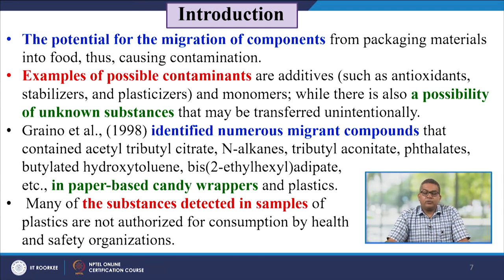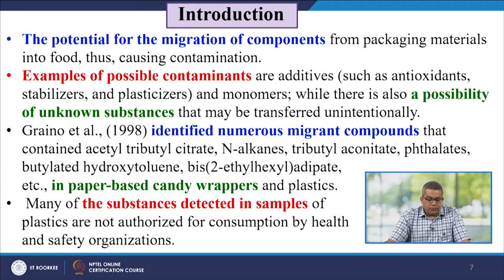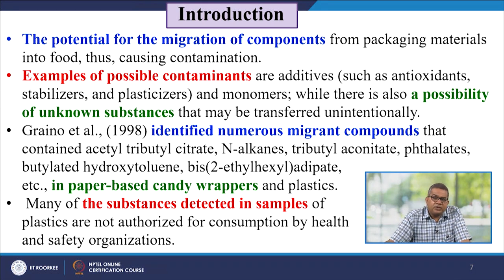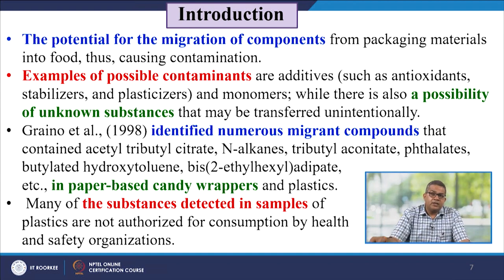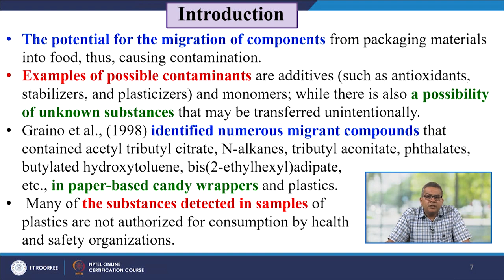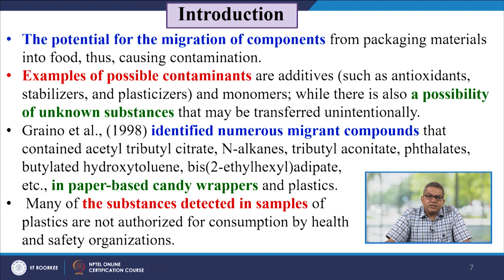The packaging material plays a very crucial role. The potential for migration of components from packaging material into the food may cause contamination, which is highly undesirable. Examples of possible contaminants are additives like antioxidants, destabilizers and plasticizers used in packaging material. There may be certain monomers, unknown substances transferred unintentionally, certain fillers, and certain dyes.